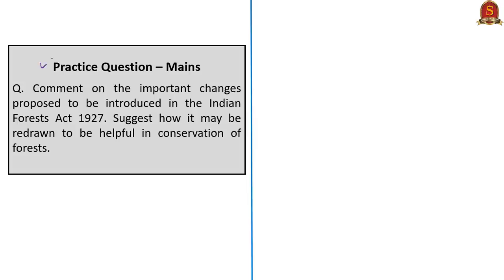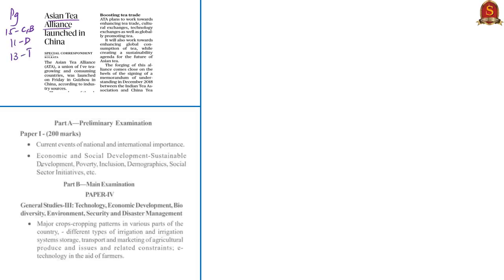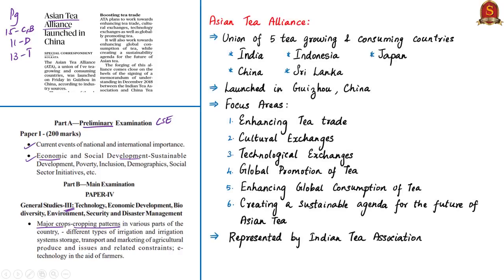Moving on to the next article, which discusses the Asian Tea Alliance. It appeared on page 15 of Chennai and Bengaluru edition, page 11 of Delhi edition, and page 13 of Thiruvananthapuram edition. This fits under current events and economic development in the prelims syllabus, and GS Paper 3 under major crops and cropping patterns in the mains syllabus. The Asian Tea Alliance is a union of five tea-growing and consuming countries: India, China, Indonesia, Sri Lanka, and Japan. It was recently launched in the city of Guizhou in China.